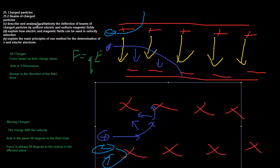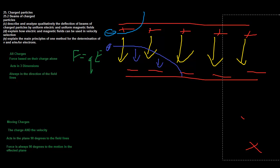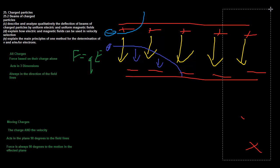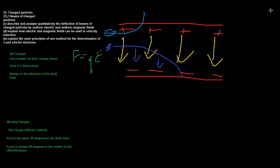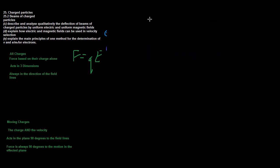We've now qualitatively analysed deflections of beams of charged particles: any positive particle experiences this kind of motion, any negative particle experiences the opposite motion. That's how magnetic and electric fields differ. Now, how can we use these properties in velocity selection of charged particles?